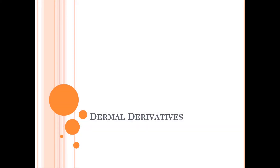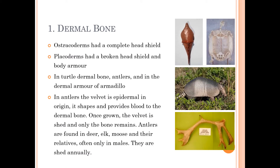These are those derivatives which are part of the skin, especially the part of the dermis. The first one is the dermal bone. Ostracoderms had a complete head shield that is a part of the dermal bone. Placoderms have broken head shields, also part of the dermal bone. Turtle shells and the armor on antlers are all dermal bones, as are antlers in antelopes or deer.